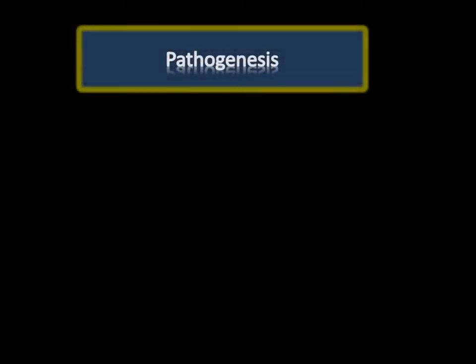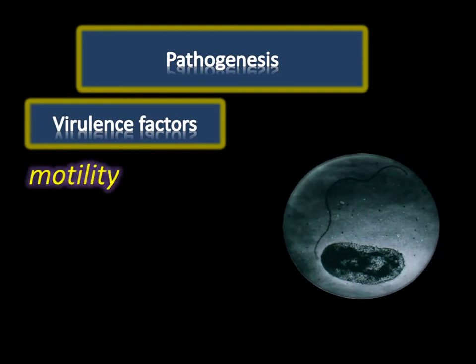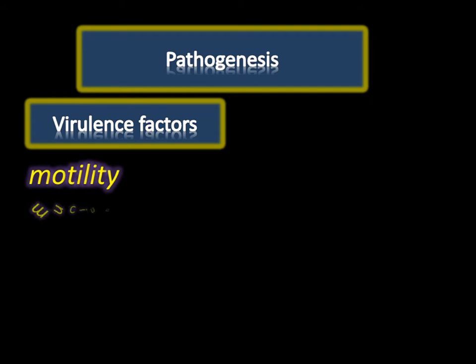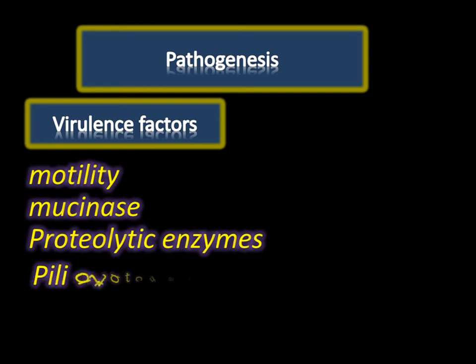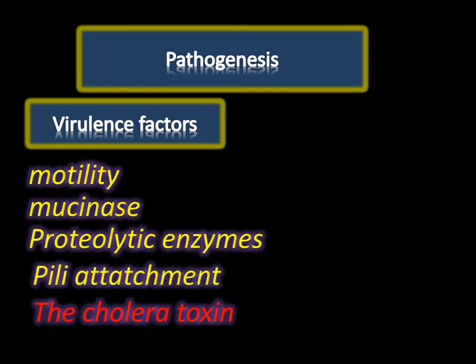Discussing the pathogenesis of cholera: Vibrio cholerae, the causative organism of cholera, is a gram-negative bacillus. It has certain virulence factors. The most important is motility. It also has enzymes like mucinase and proteolytic enzymes, which help in crossing the mucus barrier. Pili enable attachment to the intestinal epithelial cells.